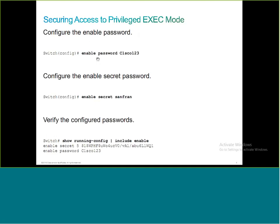The difference between the two: when you configure 'enable password', the password is stored in clear text — as you can see when you type 'show running-config', the enable password is displayed as-is. But 'enable secret' is always hashed using MD5. It is not encrypted — it is hashed, meaning the password is converted into a hash value. In the config you see 'enable secret 5' followed by the MD5 hash value.